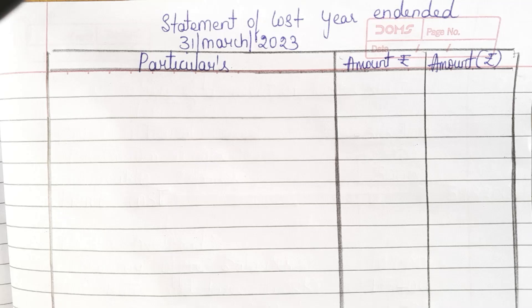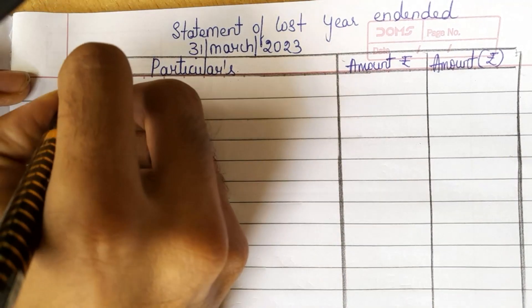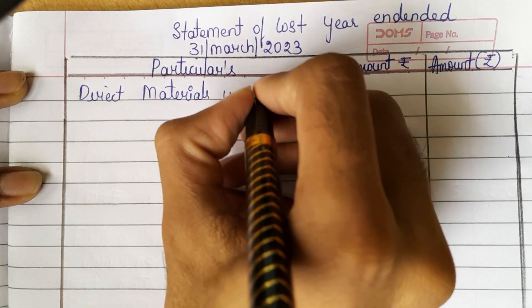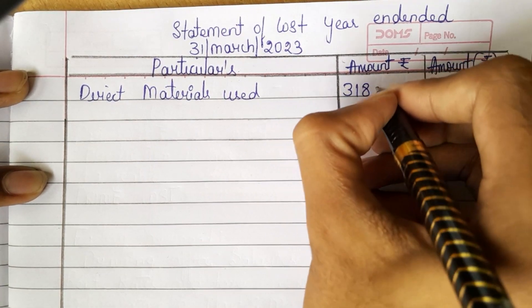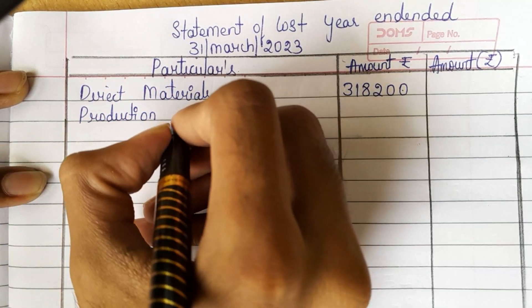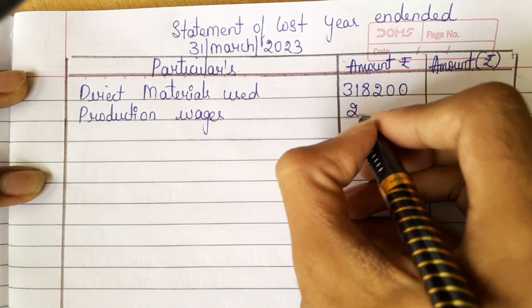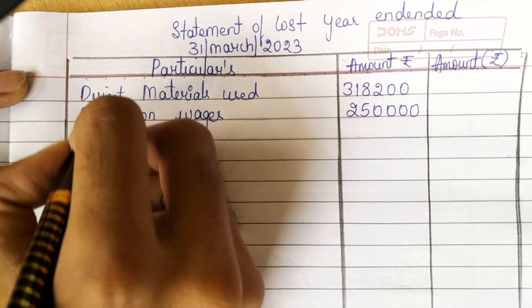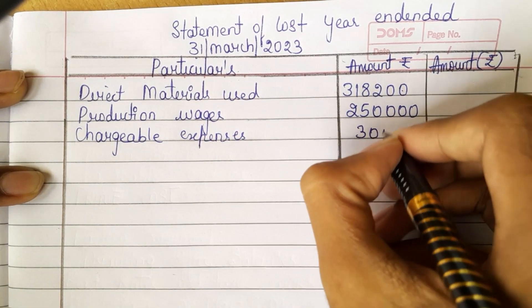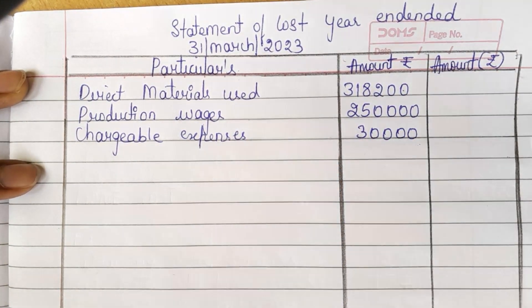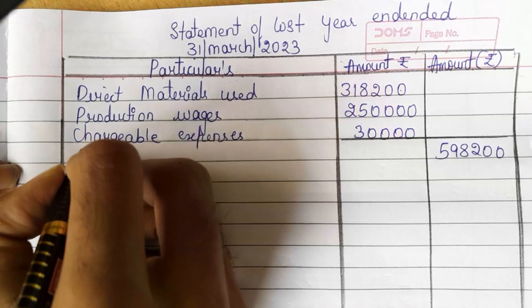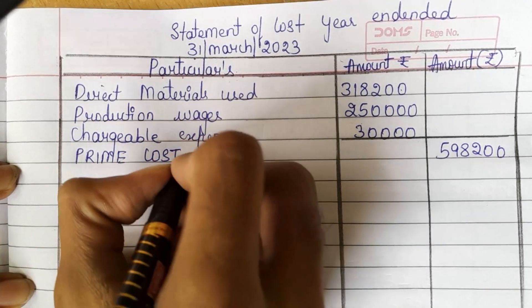Now let us see how to solve this problem. First we have direct materials used: 3,18,200. Next we have production wages: 2,50,000. Then we have chargeable expenses: 30,000. Adding all three items, we get 5,98,200. This is our prime cost.